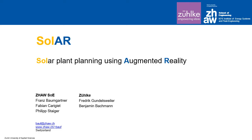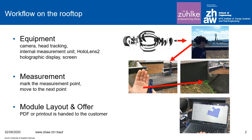The solar plant planning using augmented reality is a joint project between the Zurich University and the Zülke company, also located in Switzerland. The presented workflow on the rooftop is based on the equipment of the HoloLens, which the planner is wearing on his head.